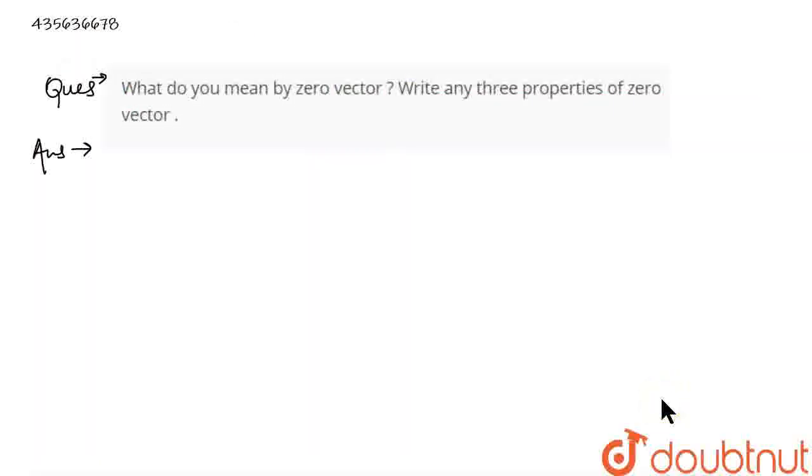Hey guys, so the question here is: what do you mean by zero vector? And write any three properties of zero vector.